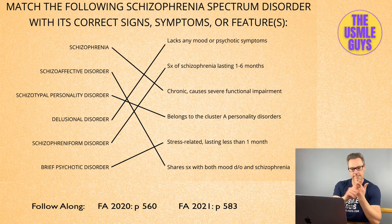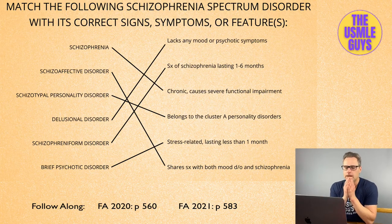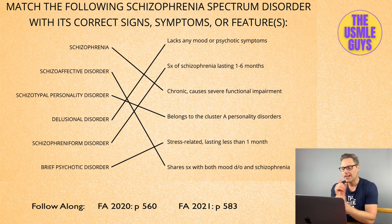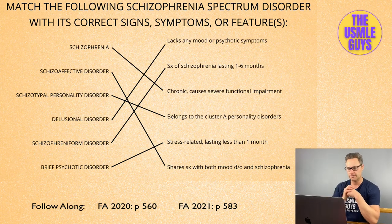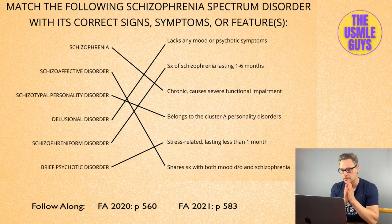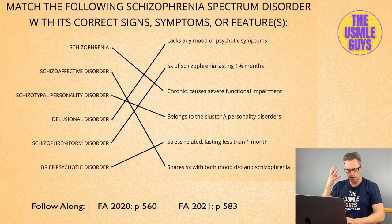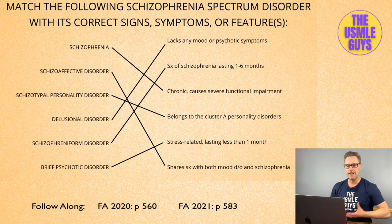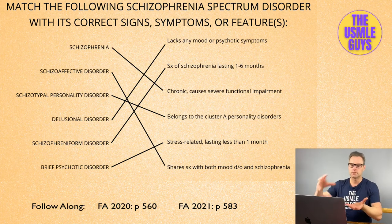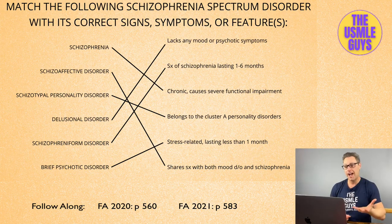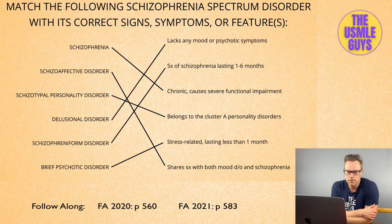Schizoaffective disorder combines schizophrenia with an affect disorder — bipolar or major depression. To differentiate it from a mood disorder with psychotic features, the patient should have at least two weeks of psychotic symptoms without mood symptoms. Think of it this way: if it's a mood disorder with psychotic features, the core problem is the mood disorder; in schizoaffective disorder, the core problem is the psychotic disorder with mood disorder layered on top. You can make the diagnosis of schizoaffective disorder if psychotic symptoms are present without the mood disorder.